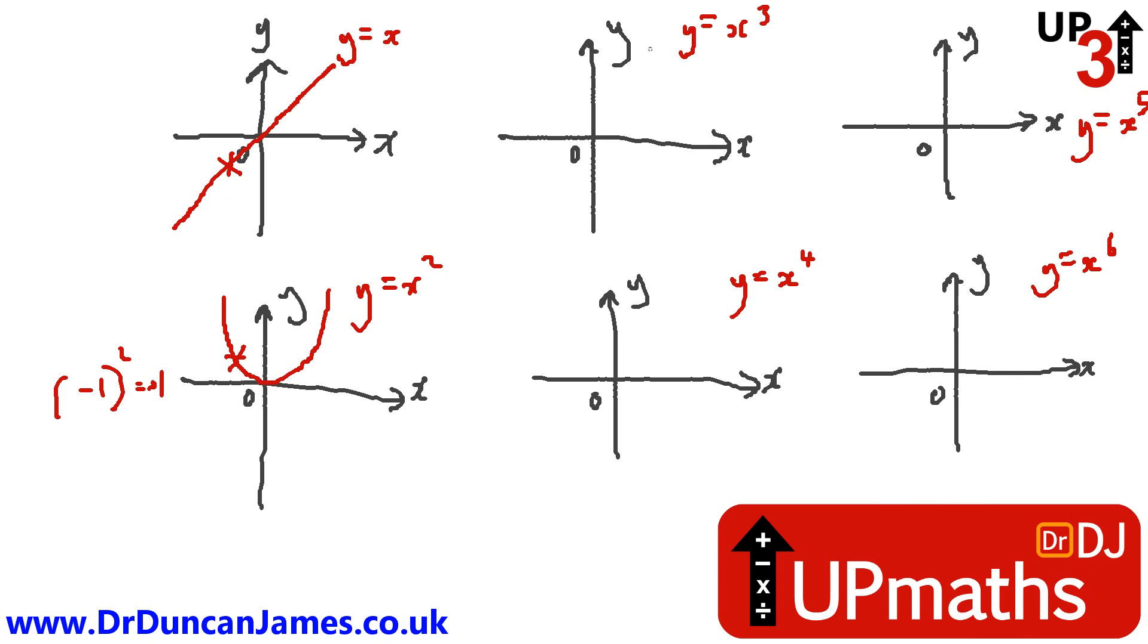What about y equals x cubed? Well, that one looks like that. What if x is minus 1? Well, minus 1 cubed, oh, that's minus 1 times minus 1 times minus 1, which is negative, which is why it passes through that point.